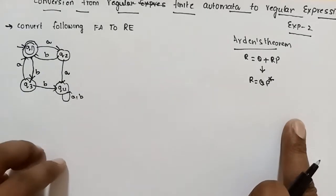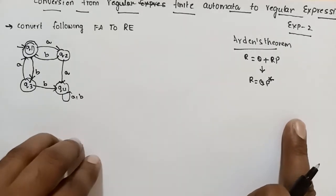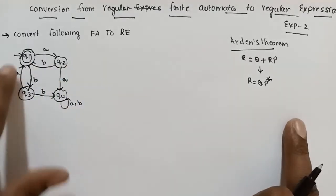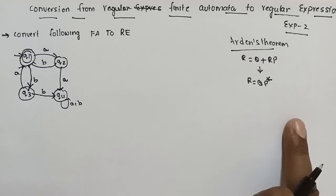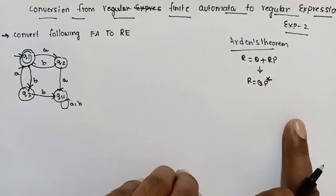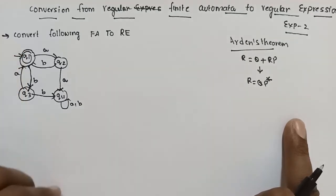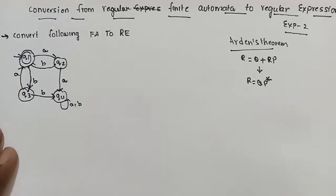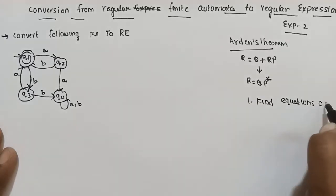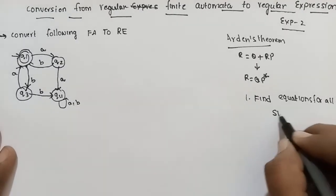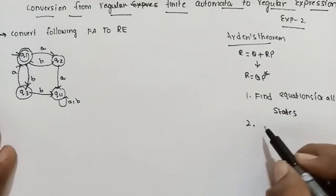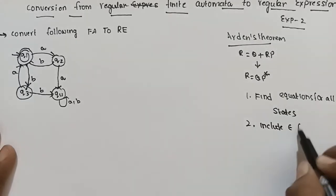We will check two points: epsilon moves, and the second is the initial state. We will check the epsilon moves. The initial state and the final state — the final state will be the result of the regular expression. The first step is to find equations for all states. The second point is to include epsilon for the initial state.